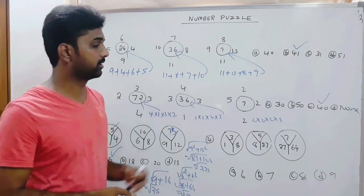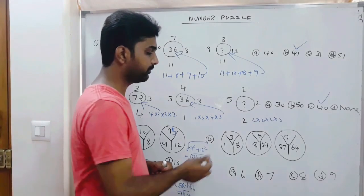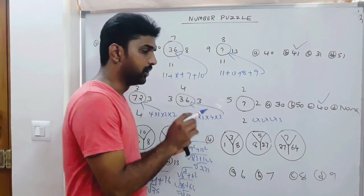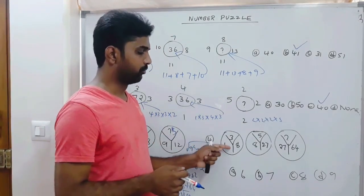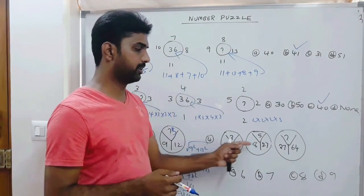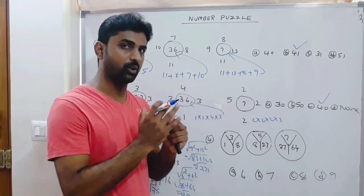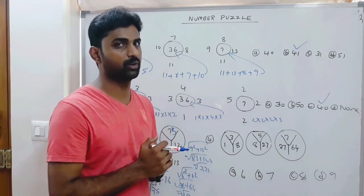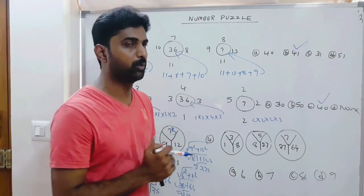Okay students, let us see another one. If you see the numbers here: 1, 8, 27, 64 — these are all perfect cubes.